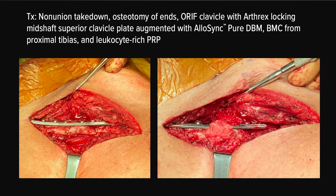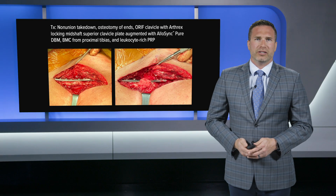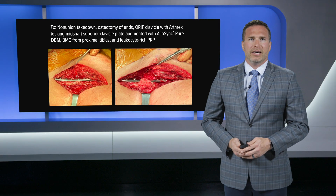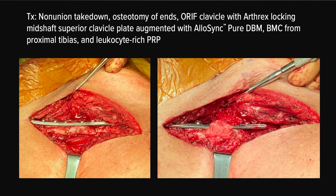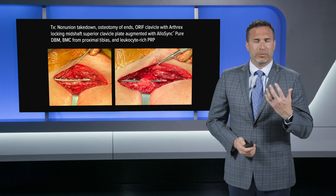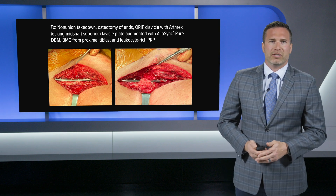The treatment was surgery — a non-union takedown. I found a fibrous type non-union between the two ends. I performed an osteotomy, cleaned up both ends, and got good bleeding bone. I did an open reduction internal fixation with a superior plate and augmented this with biologics. The biologics I chose were AlloSync, which is a DBM that is pliable. I mixed it with leukocyte-rich PRP that was neutrophil deficient, as well as bone marrow concentrate from his bilateral proximal tibias. This formed a very nice putty, which you can see surrounding the fracture area.